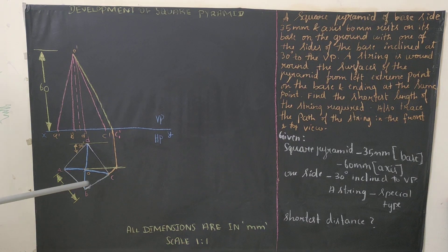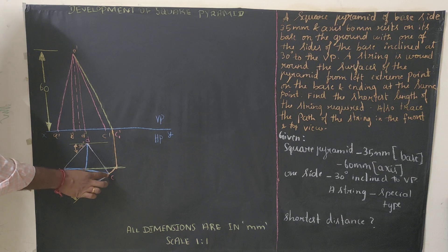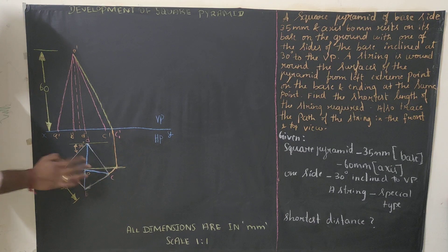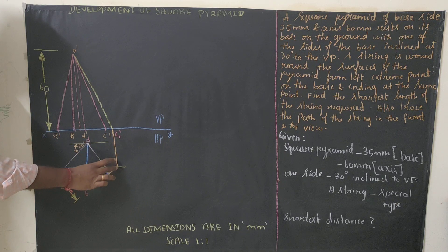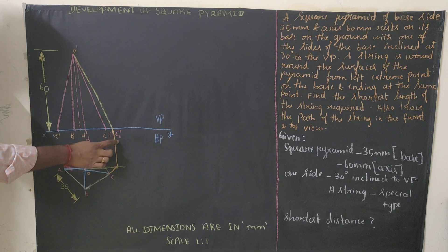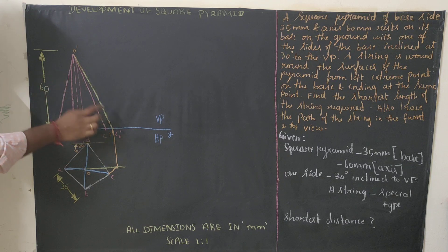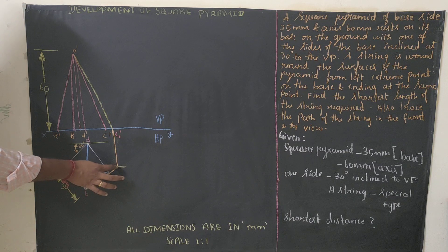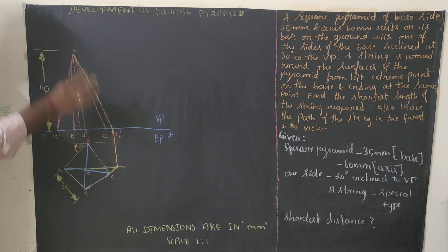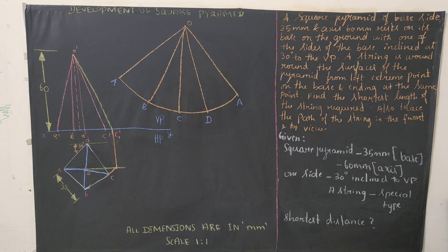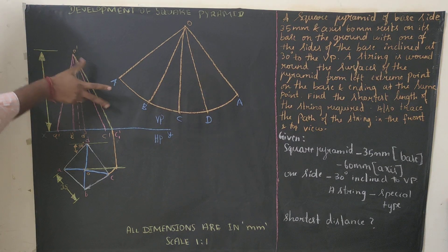OC is not parallel to the reference line, so draw a horizontal line and measure O to C. Draw a local reference line parallel to the XY line, cut the arc radius OC, and draw a vertical line to get point C1'. Join O' to C1' — this yellow line is the true slant edge. Measure O' to C1' and use that for the radial line method development.